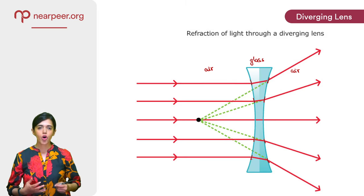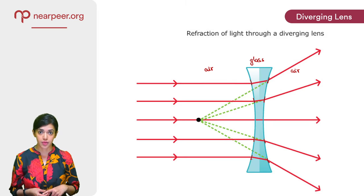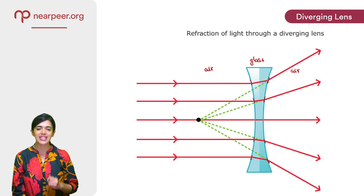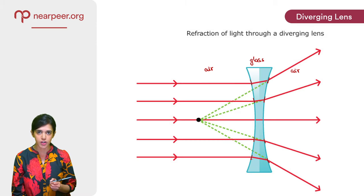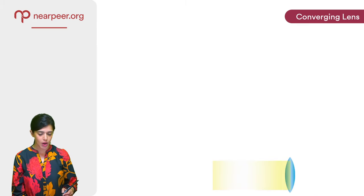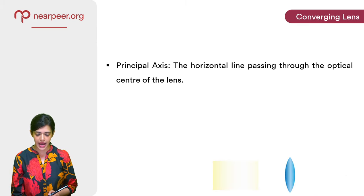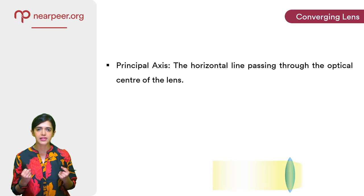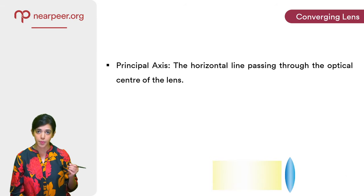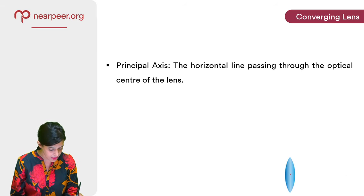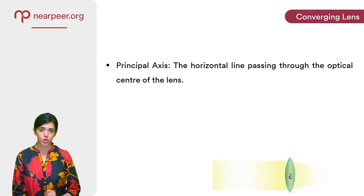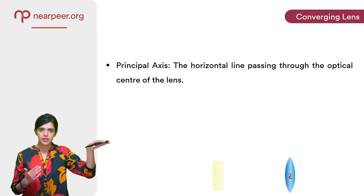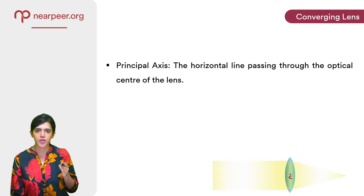So before we move on to lens diagrams, which is a very important part of this chapter, it would be very helpful for us to learn some key terminology related to converging lenses. So let's start with the principal axis. It is a horizontal line that passes through the optical centre of the lens. Now what is the optical centre, you may ask? It's simply the centre of the lens and it is denoted by a C. So if we have a horizontal line that passes through this optical centre, it is known as the principal axis.